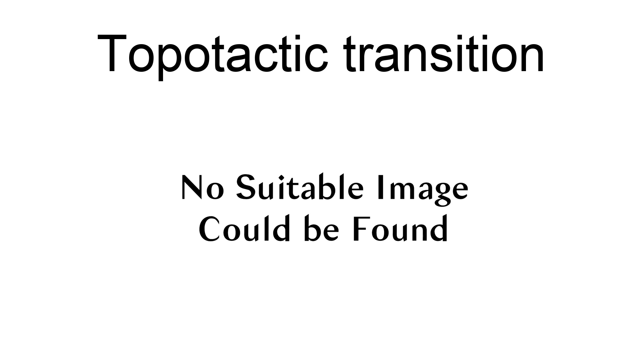In chemistry, a topotactic transition involves a structural change to a crystalline solid, which may include loss or gain of material, so that the final lattice is related to that of the original material by one or more crystallographically equivalent orientational relationships.